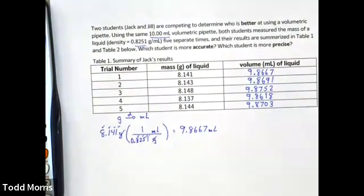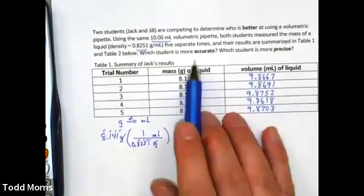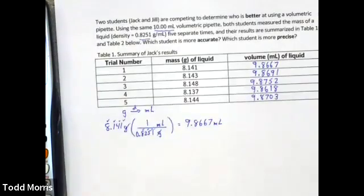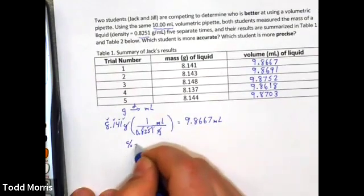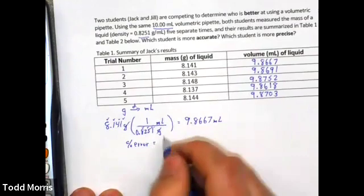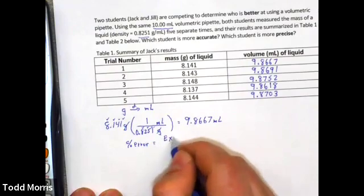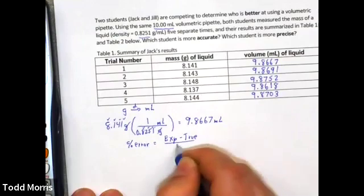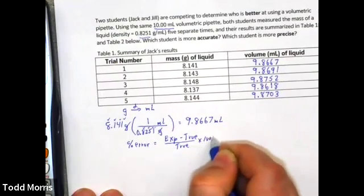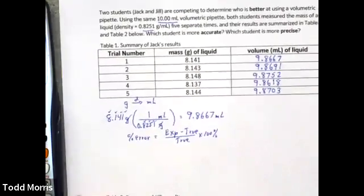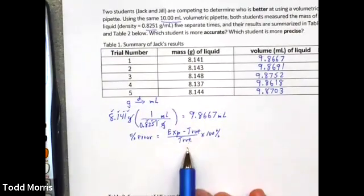Now that I've converted all of the masses into their equivalent volumes, I can now determine how accurate Jack was with his results. For accuracy, we will use the calculation of percent error. Percent error, simply the experimental value minus the true number divided by the true number times 100%. Notice that in order to determine accuracy, we have to have a true value, a known value that we can rely upon.